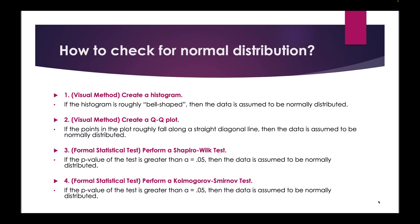There are a number of ways we can check for normal distribution. These include creating a histogram and looking for a bell-shaped curve, creating a QQ plot and seeing whether the points fall along a straight diagonal line, and doing statistical analysis and looking at the p-value. We would be looking for a p-value greater than 0.05 — a non-significant p-value — to indicate that our data is normally distributed.